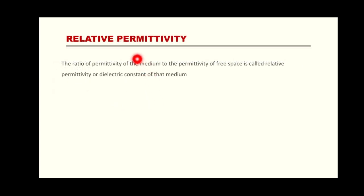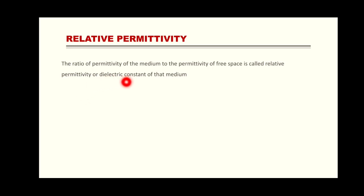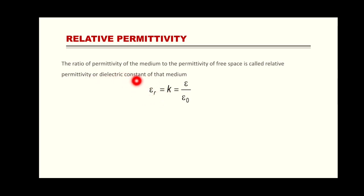Next we define relative permittivity, which is the ratio of the permittivity of the medium to the permittivity of free space: εᵣ = ε / ε₀. Relative permittivity has another name which is called dielectric constant. In upcoming lectures we will study more about dielectrics, but for now remember that relative permittivity is also called dielectric constant, denoted by εᵣ.